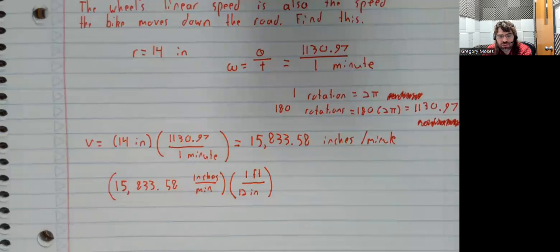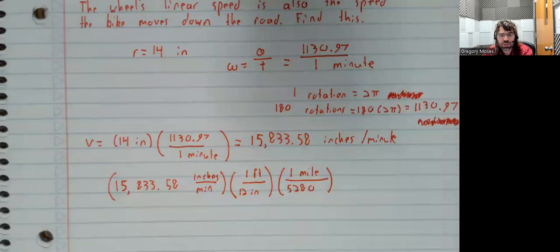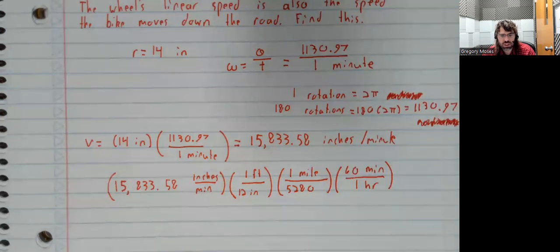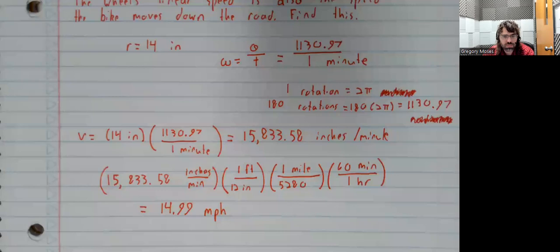We'll convert from inches to feet. Then we'll convert from feet to miles. Then we'll convert from minutes to hours. And when the dust clears and we do all of that multiplication, we find that the bike is moving at about 15 miles per hour. 14.99 something.